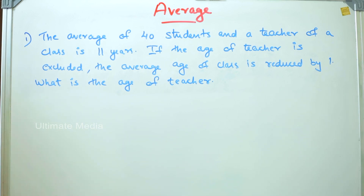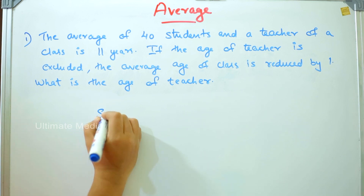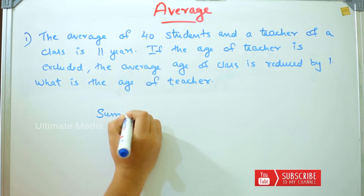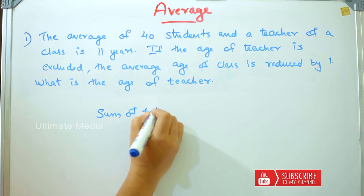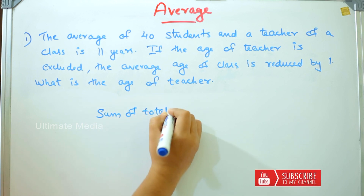If we have any questions in the prelims and mains — in the PO exam — we will have questions on average. The average formula is the sum of data divided by the total number.